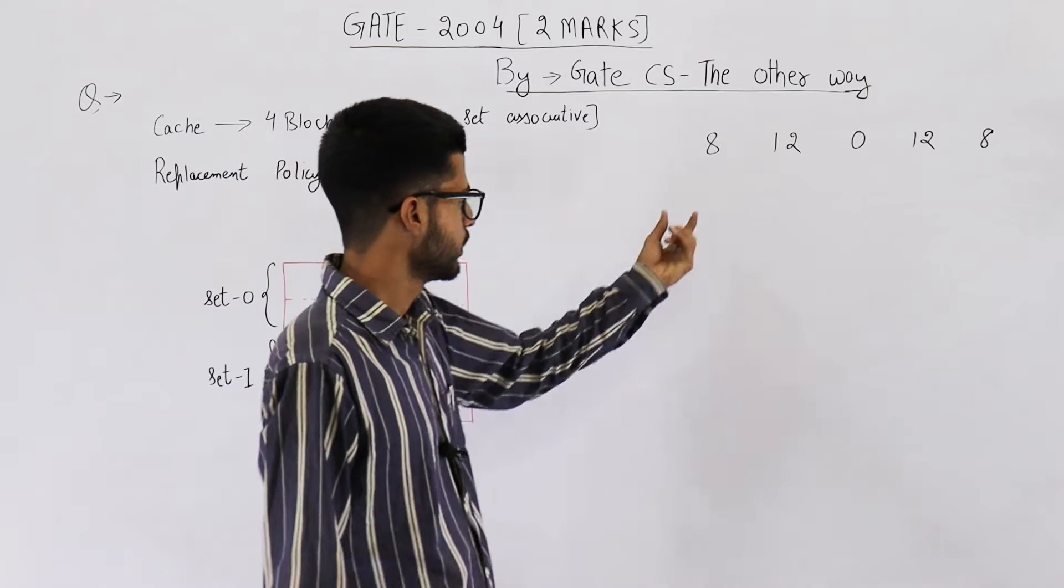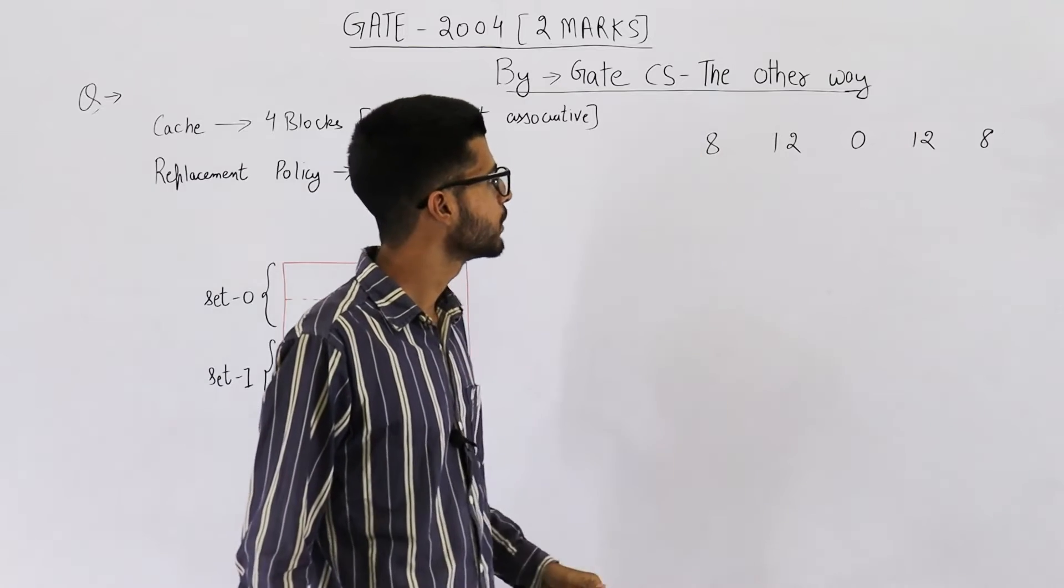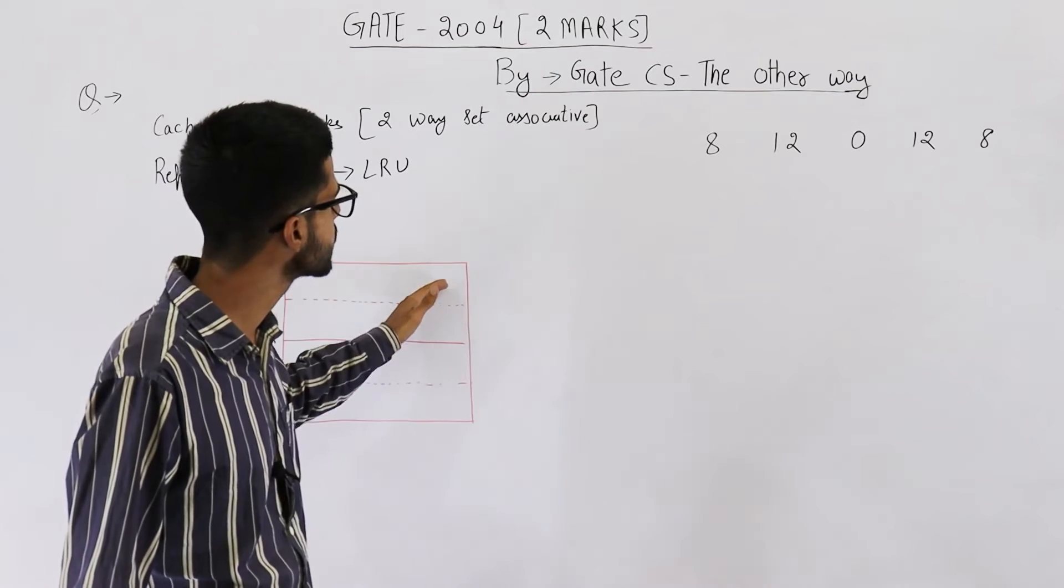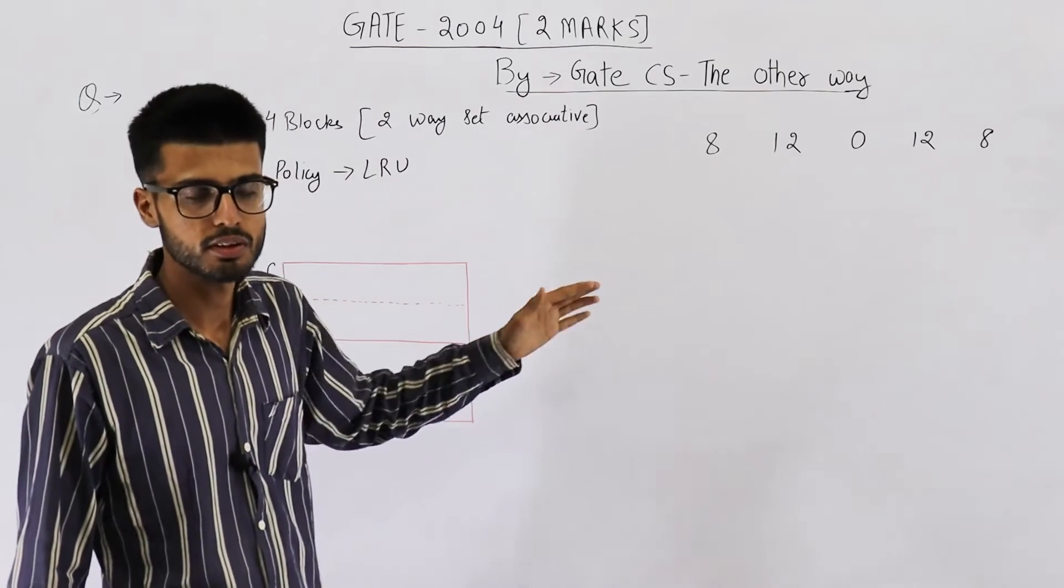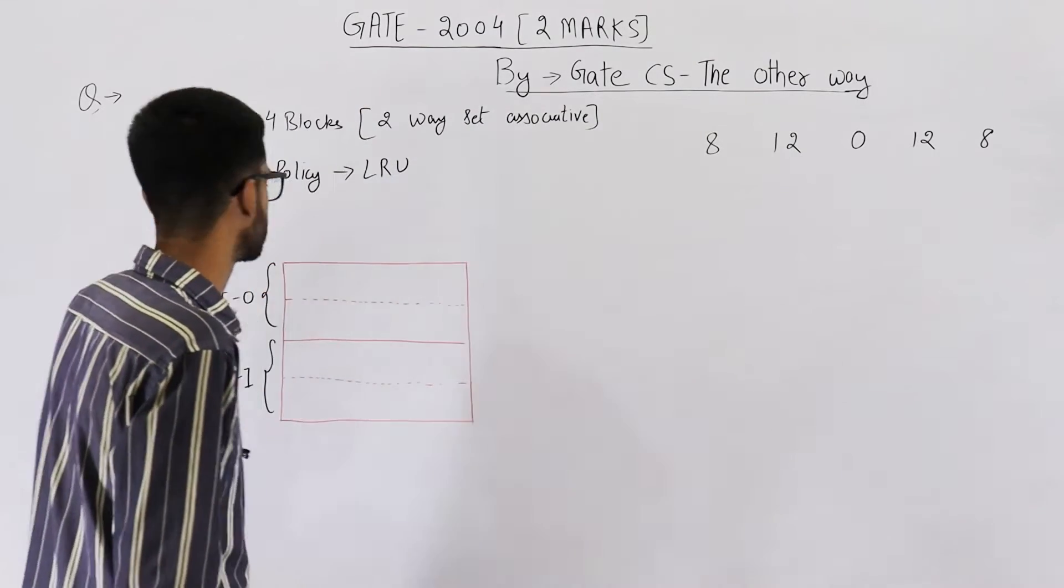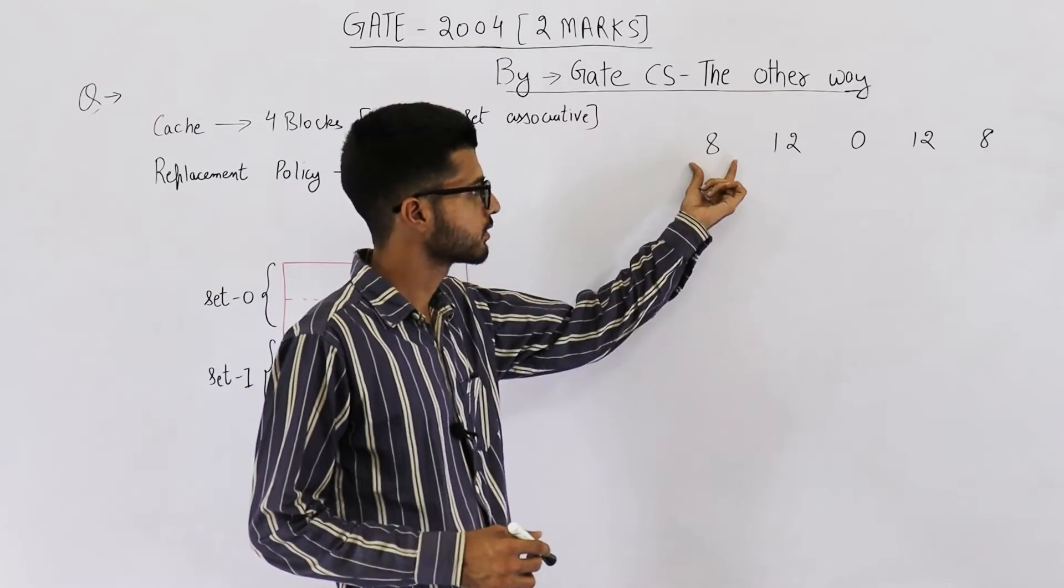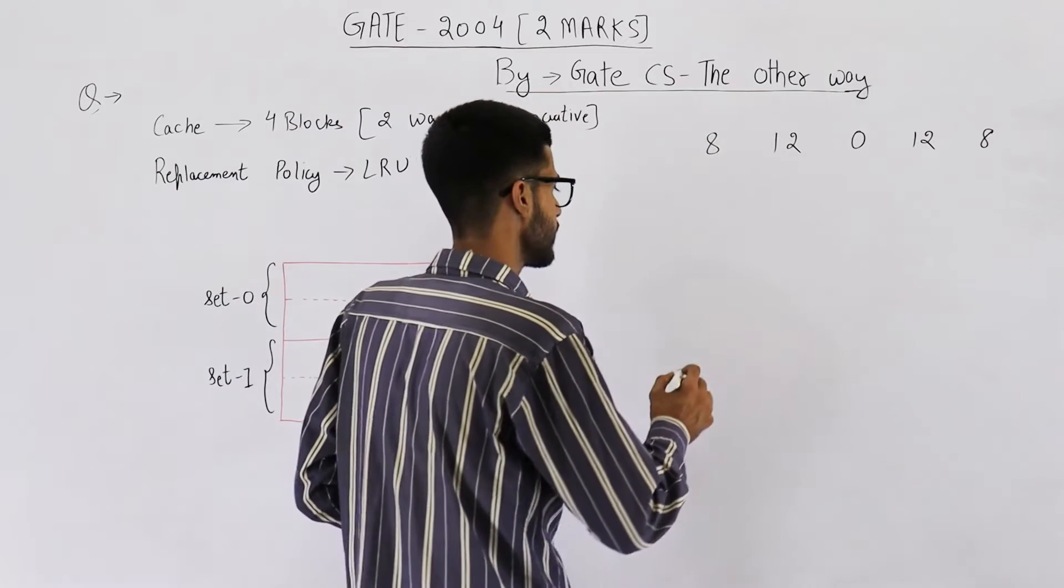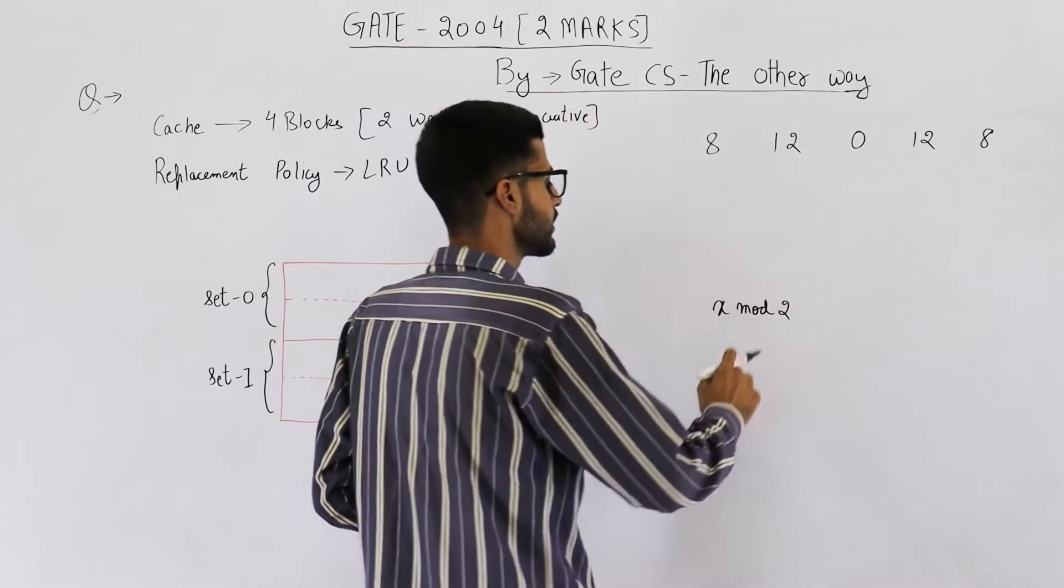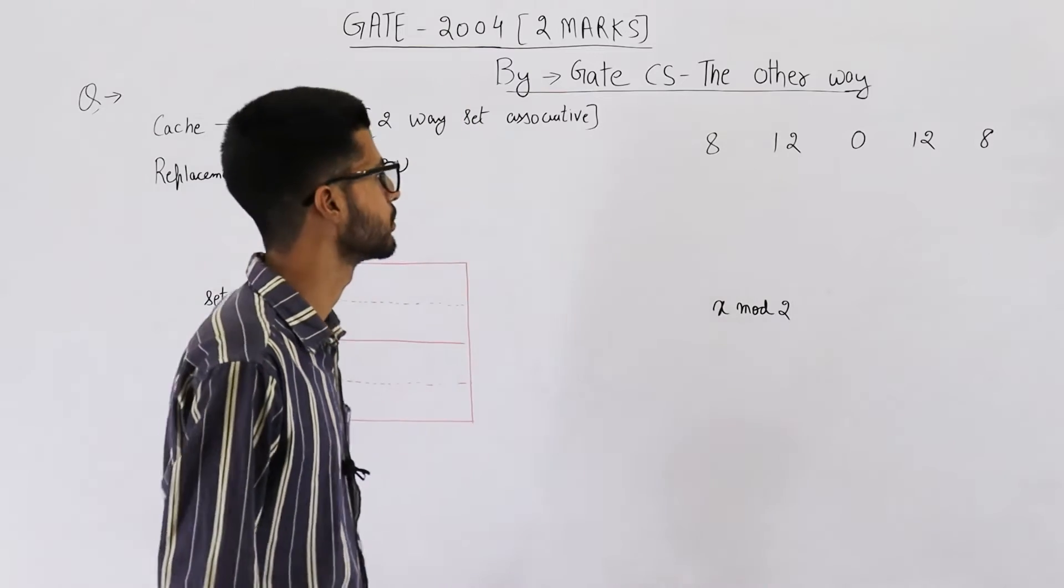So you know any reference to a RAM block will be mapped to one set. You cannot tell which line in that set is going to contain that reference block, but you can certainly tell the set number. How do we get to know the set number? Just take x mod number of sets. That means x mod 2. Number of sets here is 2. So this will tell you in which set this element is going to be placed.